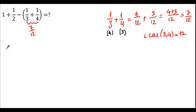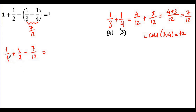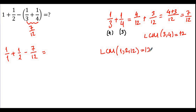We continue solving the question. Instead of 1, I can write 1 over 1, plus 1 over 2, minus 7 over 12. I have to make the denominators equal again. The denominators are 1, 2, and 12. So I have to find the LCM of 1, 2, and 12, which is equal to 12.